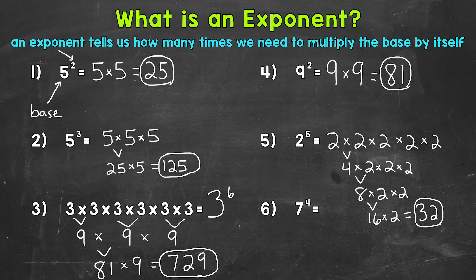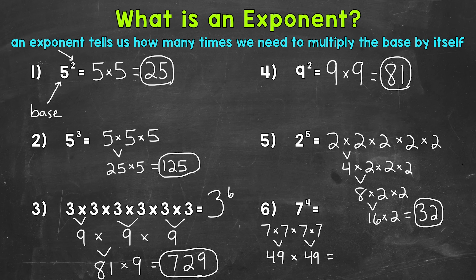Lastly, number 6, we have 7 to the fourth power. So this would be 7 times 7 times 7 times 7. We know 7 times 7 is 49, so let's pair the 7's up — we get 49 times 49, and that gives us a final answer of 2,401. So 7 to the fourth power equals 2,401.